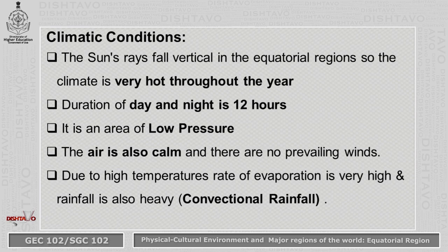The high rate of evaporation results in heavy rainfall, which normally occurs every day in the afternoon. The type of rainfall the equatorial region receives is convectional rainfall.